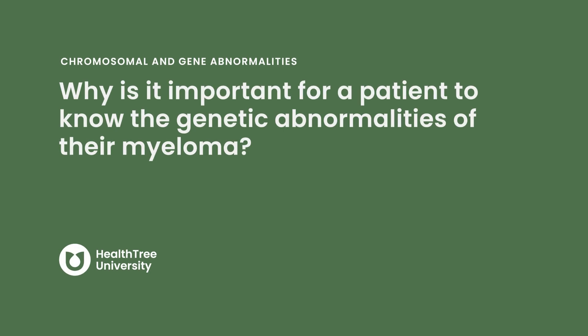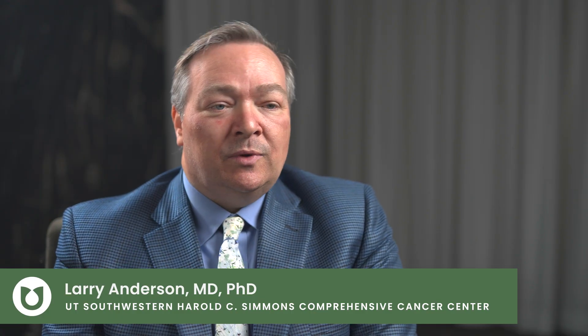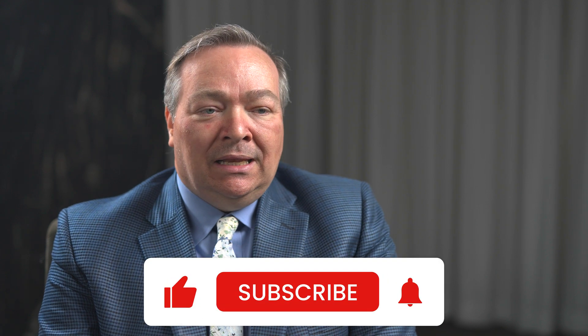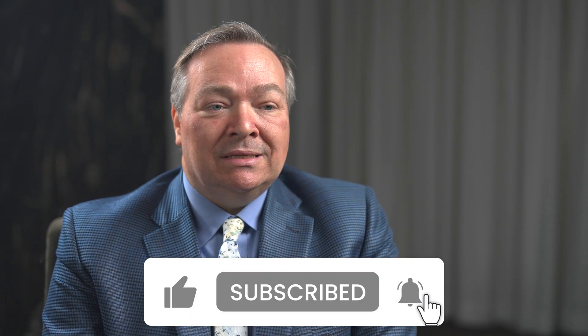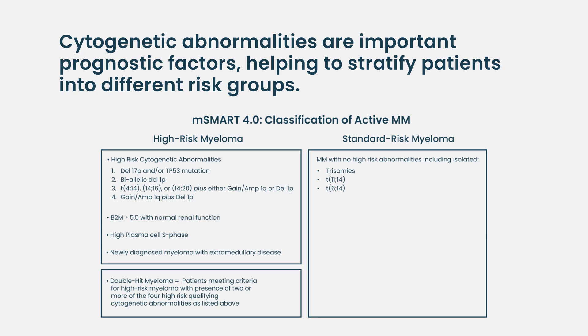Why is it important for a patient to know the genetic abnormalities of their myeloma? One of the biggest reasons we do chromosome or genetic testing in myeloma is that we have a panel of known markers — chromosome rearrangements or deletions — that portend a different prognosis. Some patients have chromosome rearrangements or changes that indicate high risk for early relapse, such as the 4;14 translocation or deletion 17p.